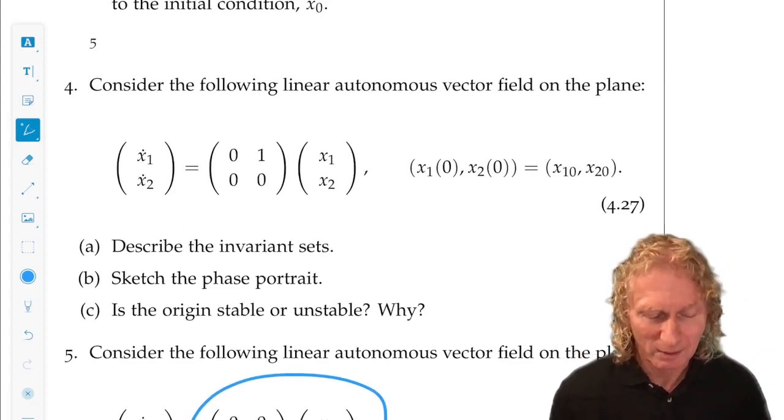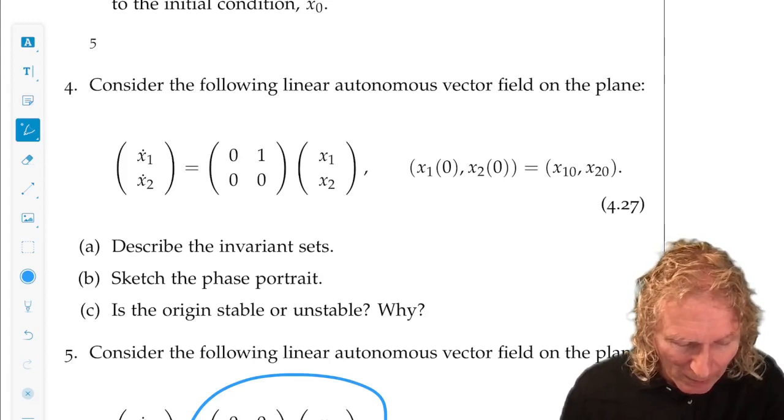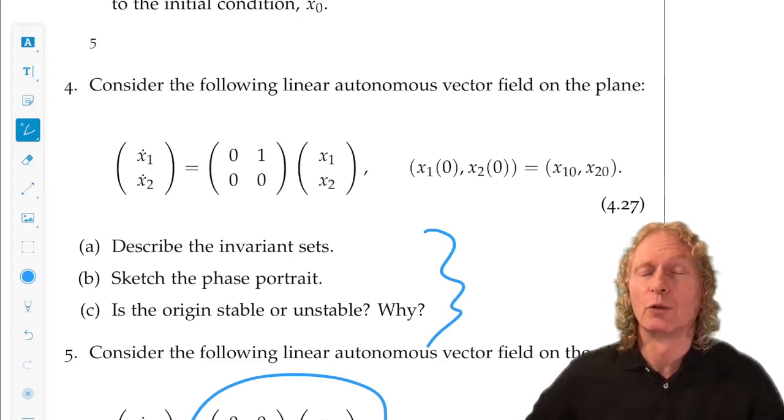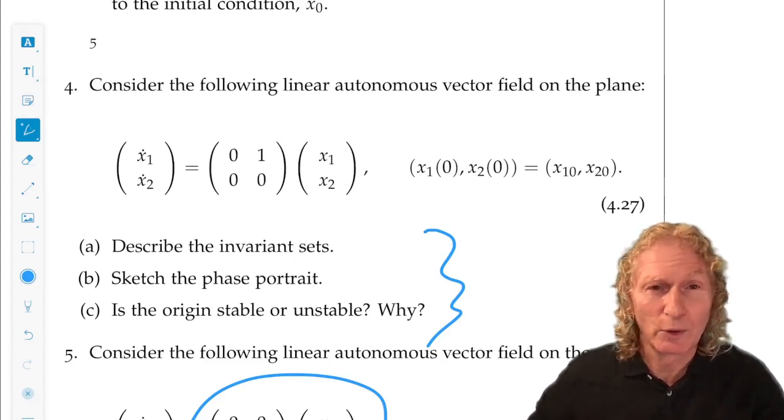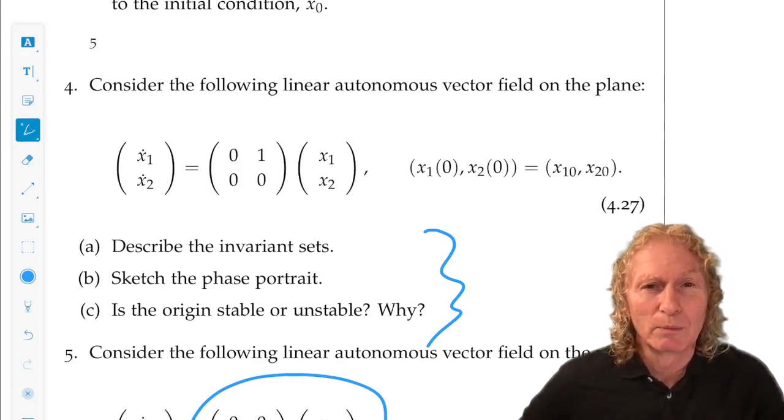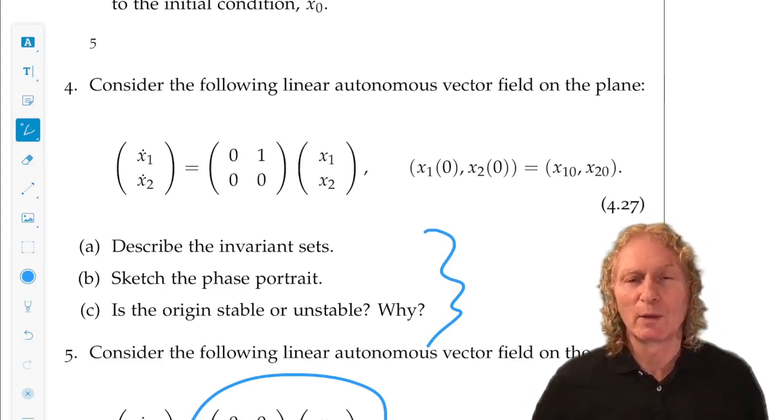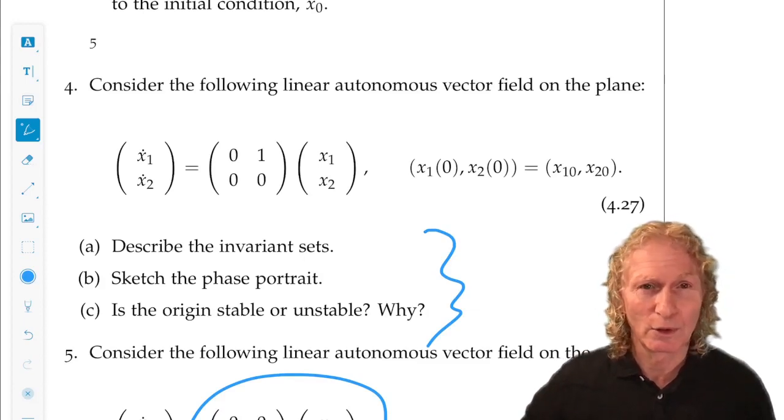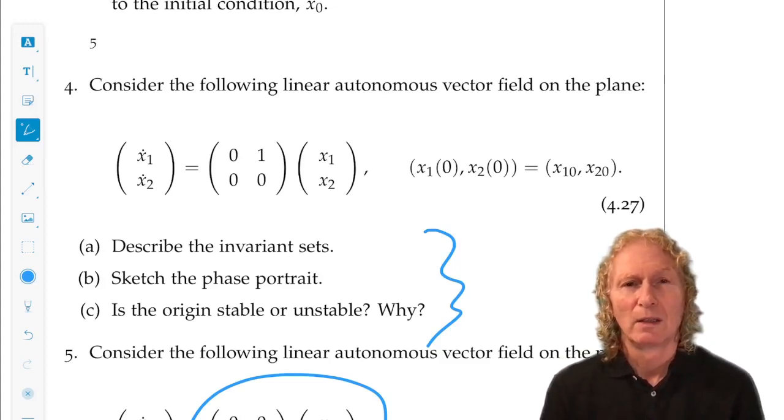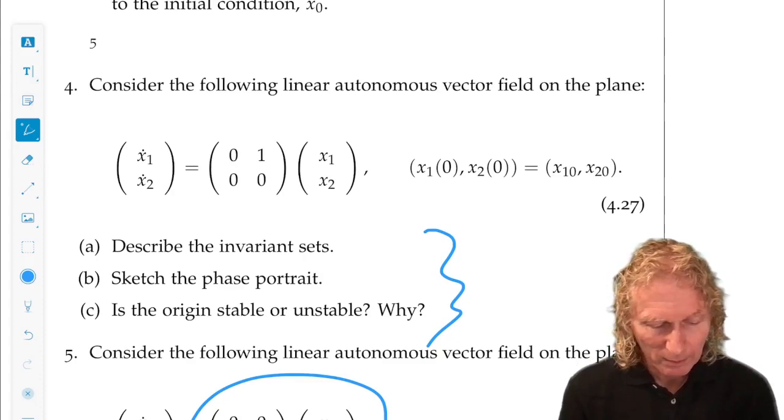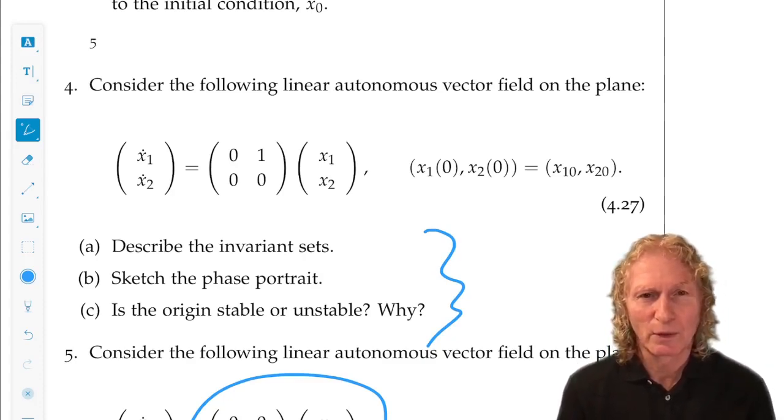Now, this one's a little bit more tricky. I ask you the same three questions. But this is x1 dot equals x2, and x2 dot equals zero. So x2 is a constant - nothing moves in x2. Everything moves with a constant speed in x1, so everything moves along a horizontal line. How fast does it move? Well, it depends on how far you are away from the x1 axis. This is a very easy one.